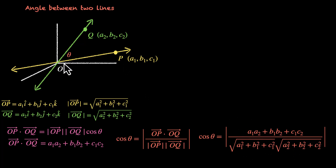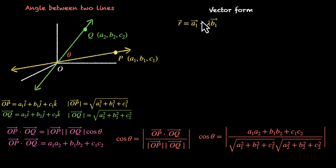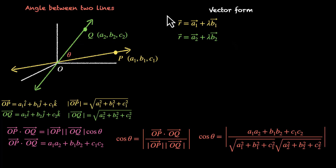If you know these two vectors, OP and OQ, we can figure out the dot product. Now, how can we use this to get the angle between two lines? Let's look at two lines in vector form: R = A1 + λB1 and R = A2 + λB2. The first line passes through A1 and is parallel to B1; the second passes through A2 and is parallel to B2. The angle between these two lines will be the same as the angle between B1 vector and B2 vector, since each line is parallel to its respective direction vector.